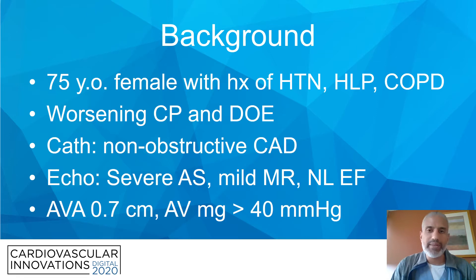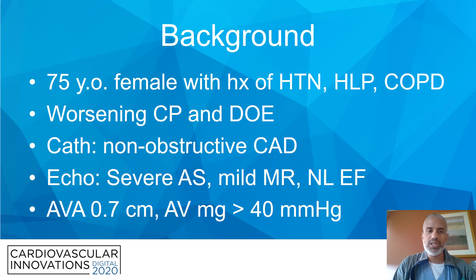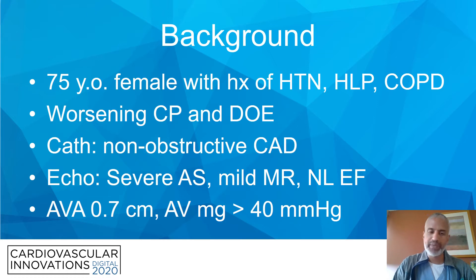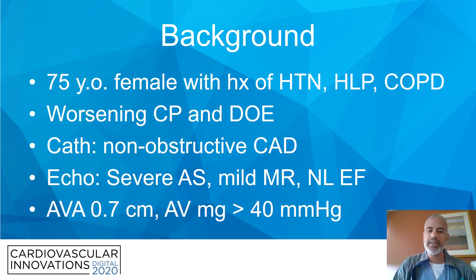Let's go with the background of the patient. This was a 75-year-old female with a history of hypertension, hyperlipidemia, and COPD. She had worsened chest pain and dyspnea on exertion. Her cath showed non-obstructive CAD. Her echo showed severe aortic stenosis with mild MR and a normal ejection fraction. Her aortic valve area measured at 0.7 centimeters squared with an AV mean gradient of greater than 40 millimeters of mercury.